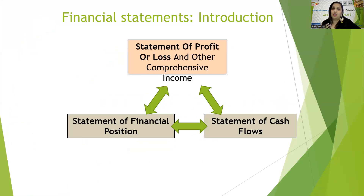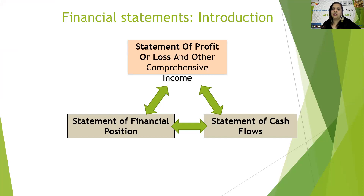There are three types of financial statements which any business will have to prepare. The first one is the statement of profit and loss, also known as statement of comprehensive income, income statement, or profit and loss account. The second statement is the statement of financial position, which is also known as the balance sheet. And the final statement is the statement of cash flows, or cash flow statement.